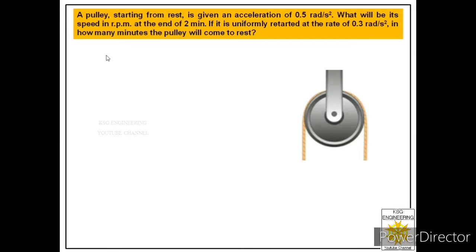Let us read the statement first. A pulley starting from rest is given an acceleration of 0.5 radian per second square. What will be its speed in RPM at the end of 2 minutes? If it is uniformly retarded at the rate of 0.3 radian per second square, in how many minutes will the pulley come to rest?